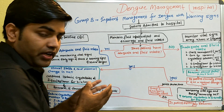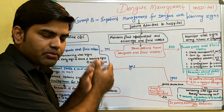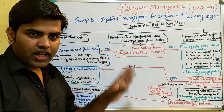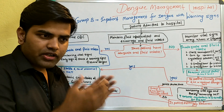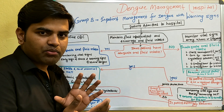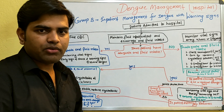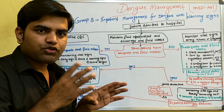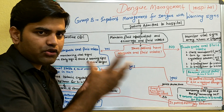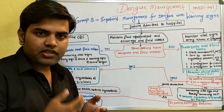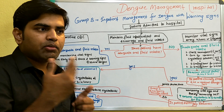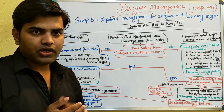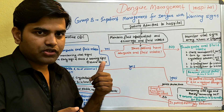Once a patient develops warning signs, you have a presumptive diagnosis confirmed by rapid diagnostic kit, ELISA, or by seeing NS1 antigen or antibodies depending on when the patient presents. When the patient develops warning signs, I have classified them into two groups: Group B — warning signs with risk factors such as diabetes, pregnancy, infancy, or poor socioeconomic conditions — and Group C.